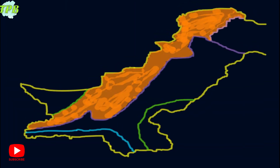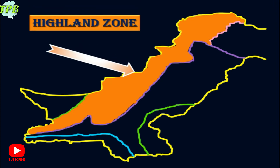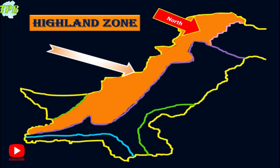Now let's have a look at the zones. The first zone, which you can see here on the map, is the highland zone. The highland zone is marked in orange. It includes north Pakistan and west Pakistan — all of the northern and western mountains and hills are included in the highland zone.